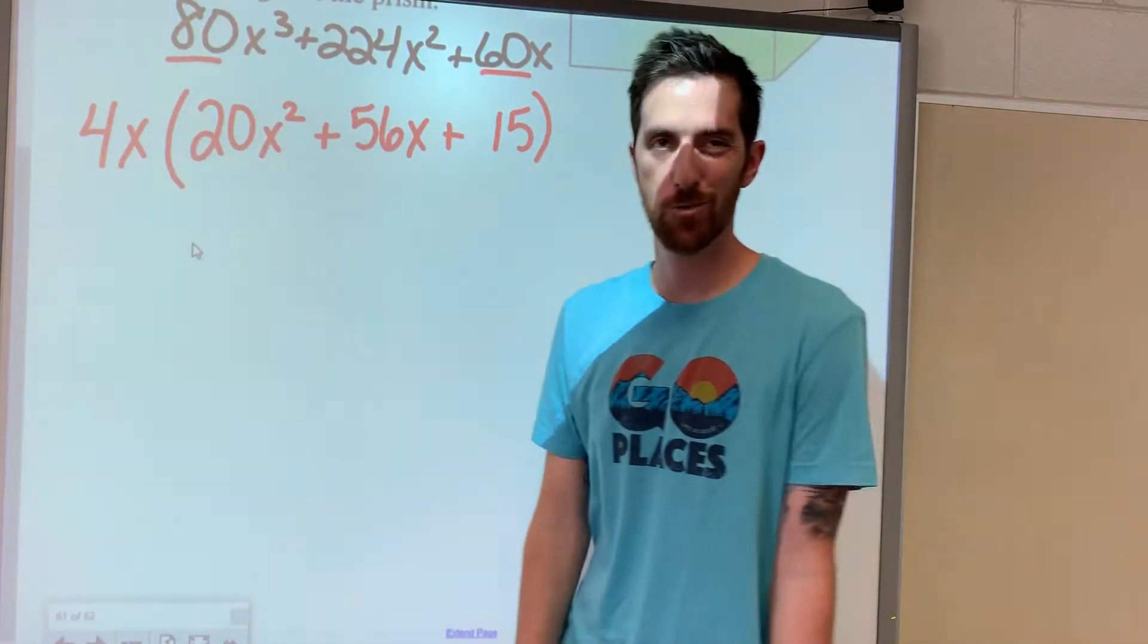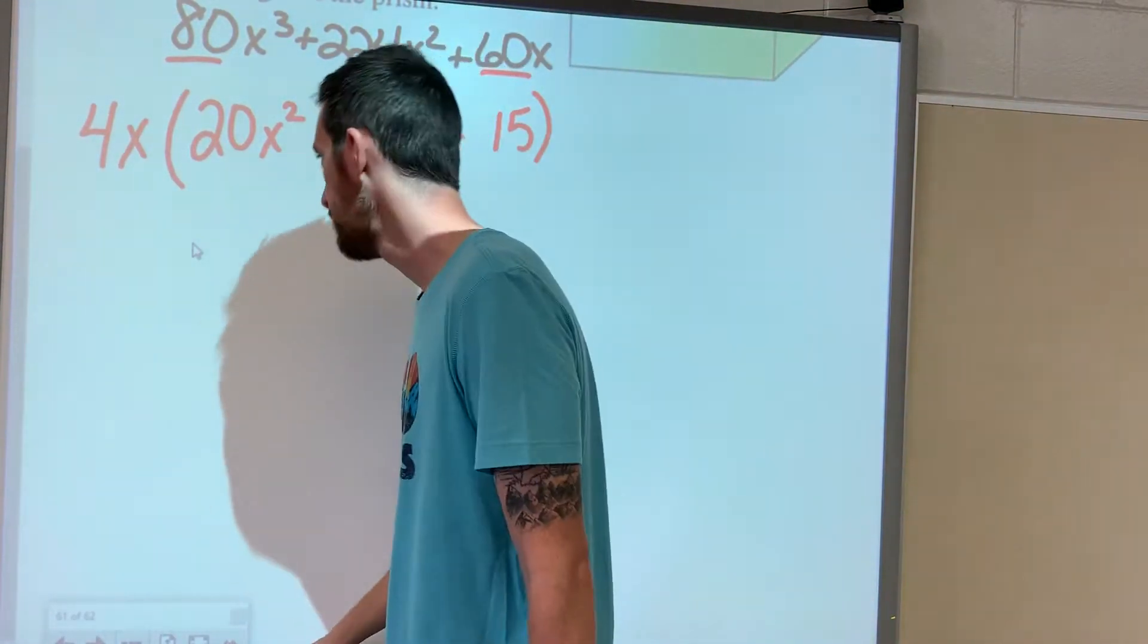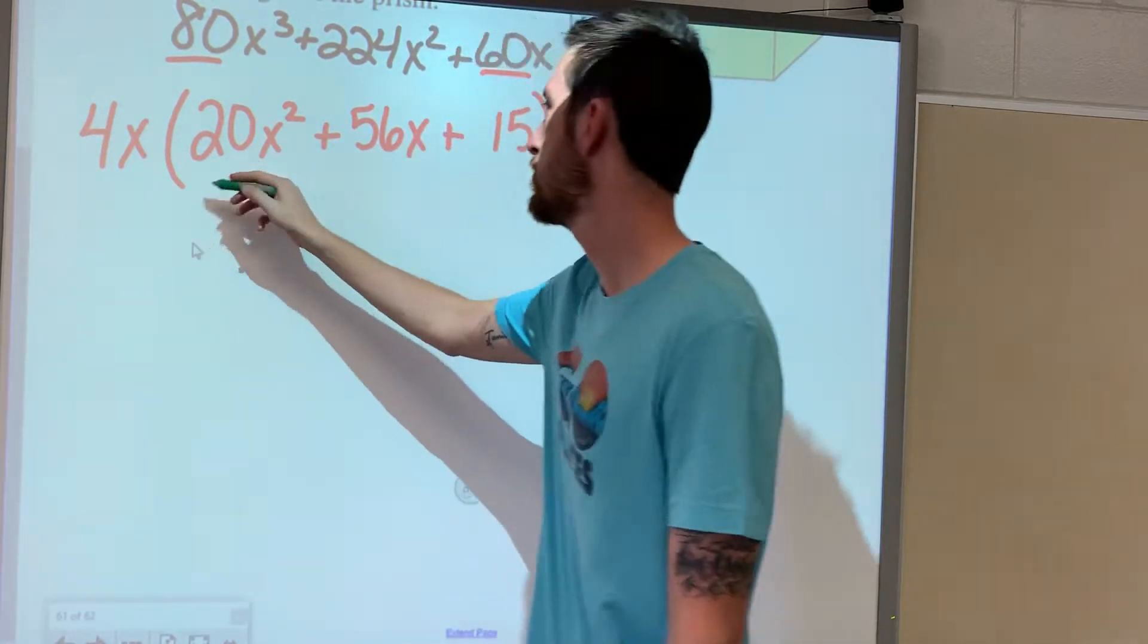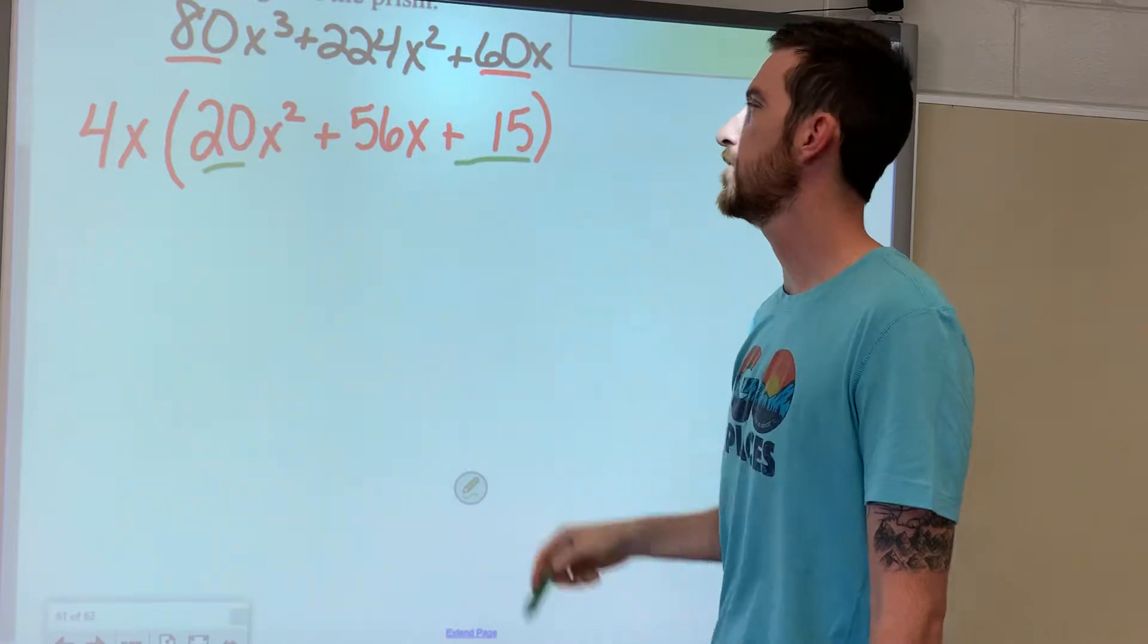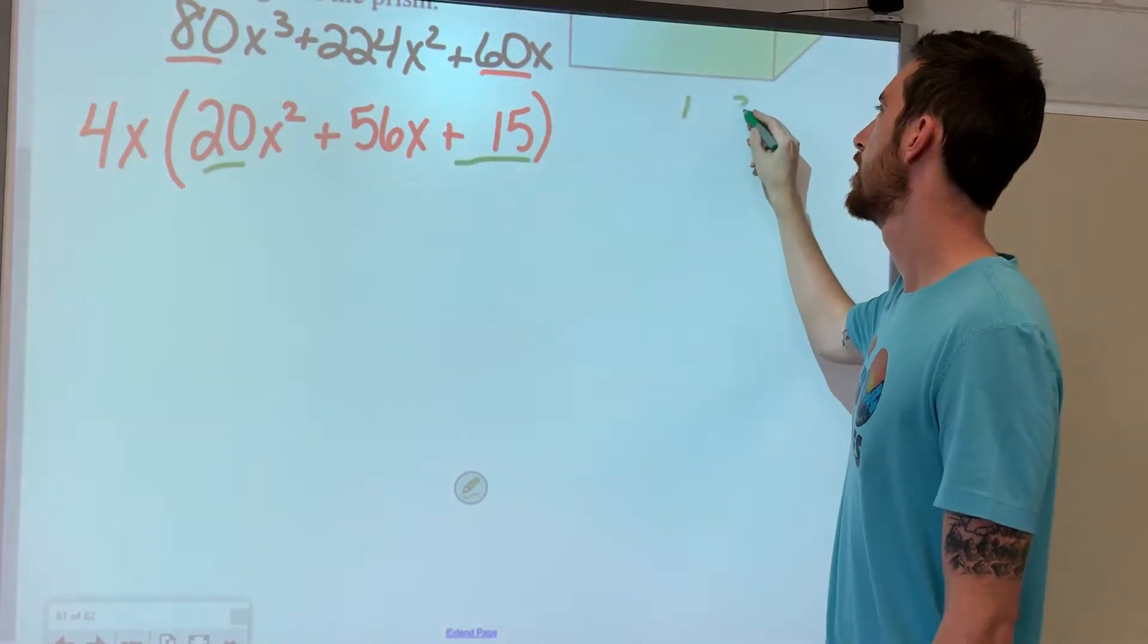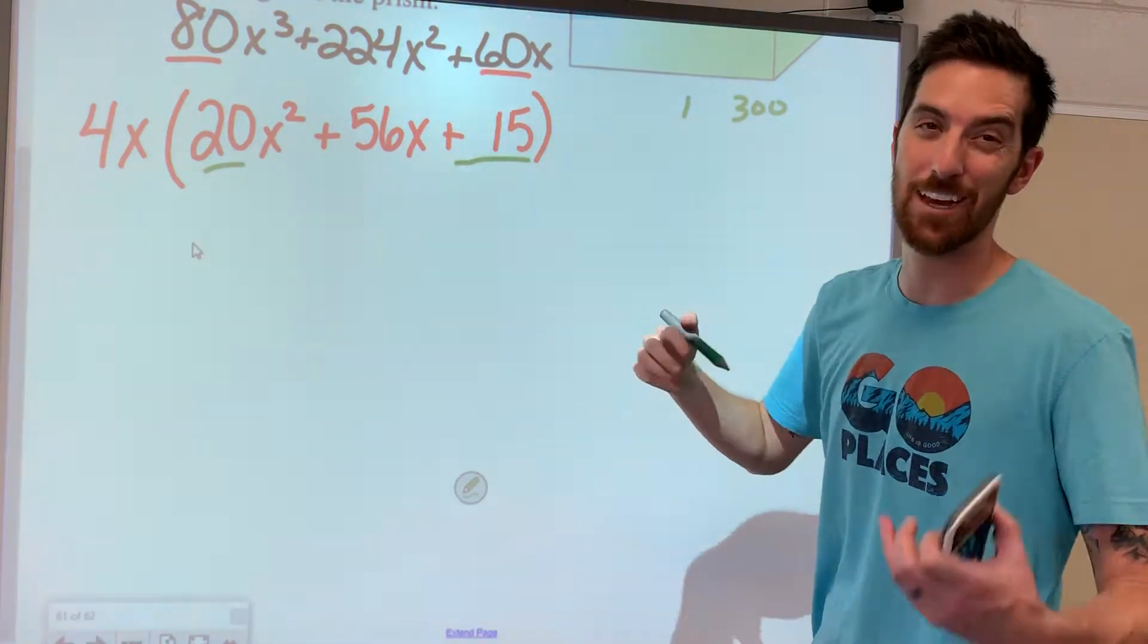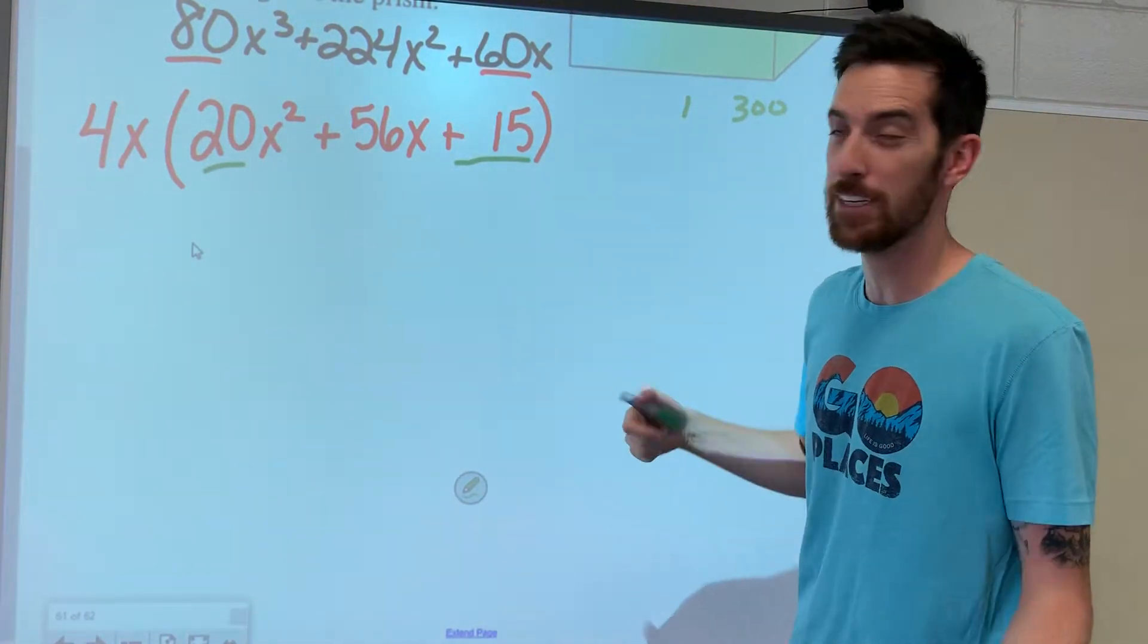Now we're going to do our sweet shortcut method here. We've got the 4x out there, so we've got to do 20 times 15, which is 300. We need factors of 300 that add up to 56. Now I know for a fact that it is 50 times 6.